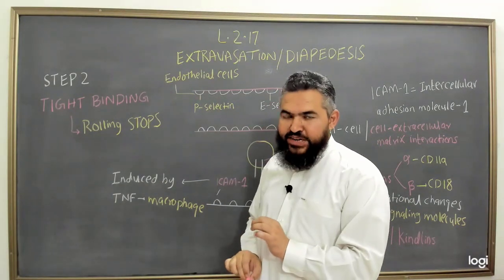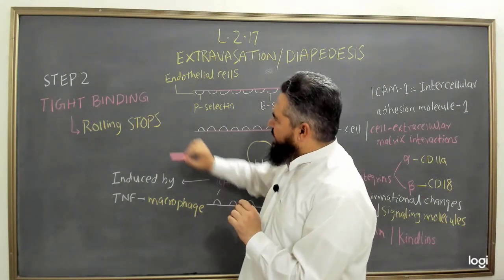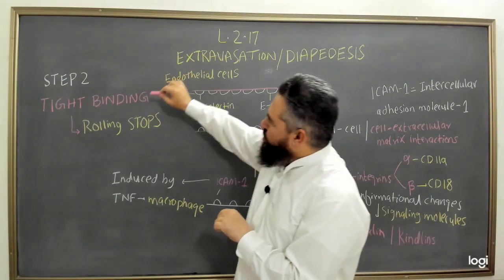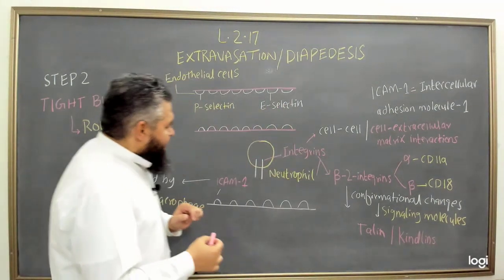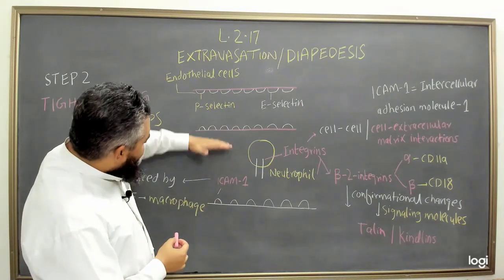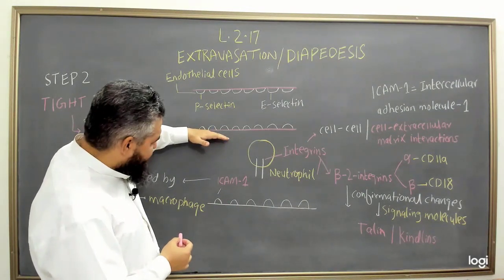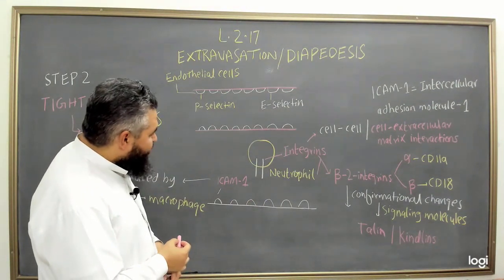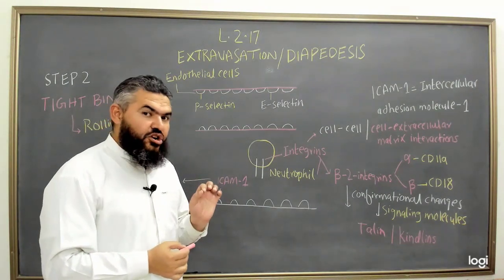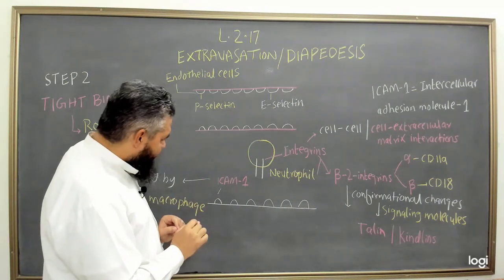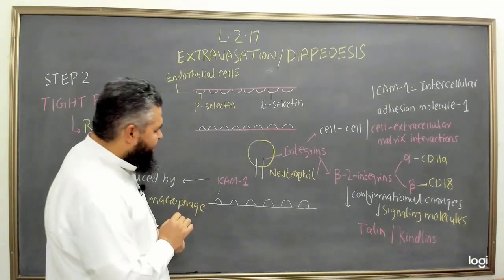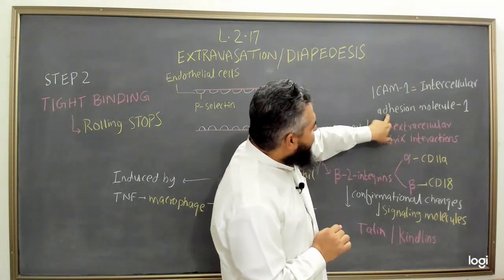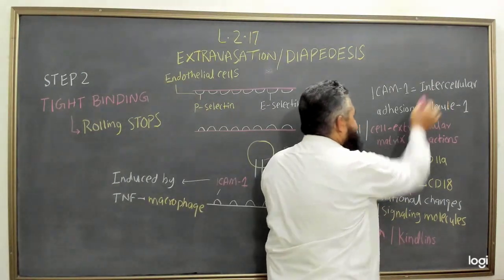That weak attachment is very important for the second step, known as tight binding, because at the end of tight binding these immune cells stop rolling and can move out of the blood vessels into the damaged tissue. In this image I'm showing a vasodilated blood vessel. On the surface of the activated endothelial cells, a variety of adhesion molecules are expressed, and one of the most important is known as ICAM-1.